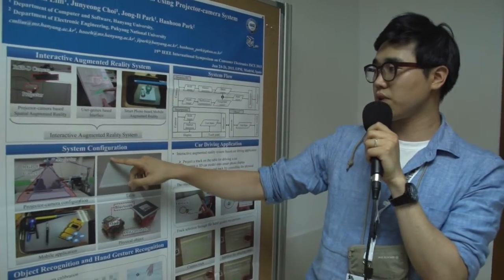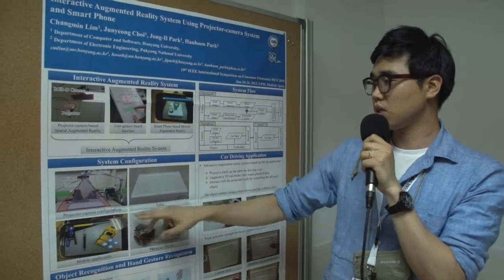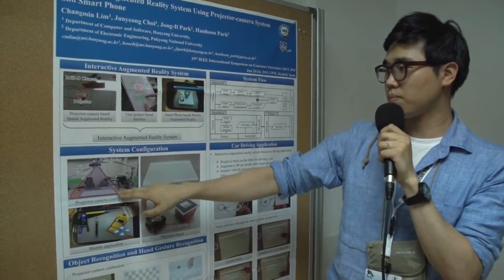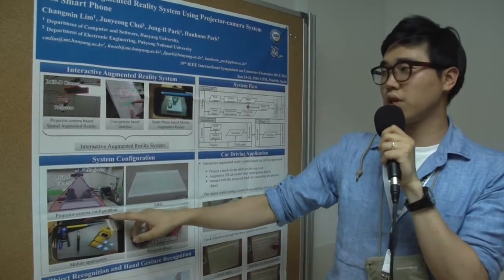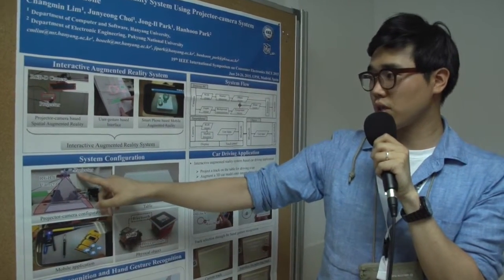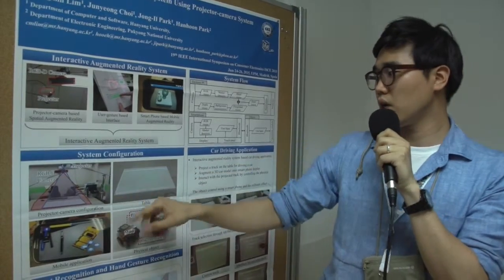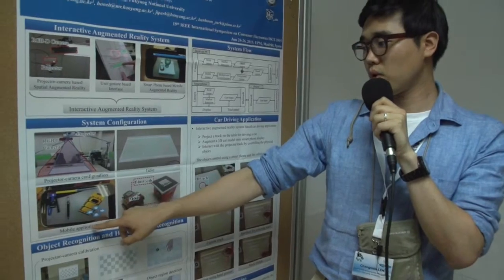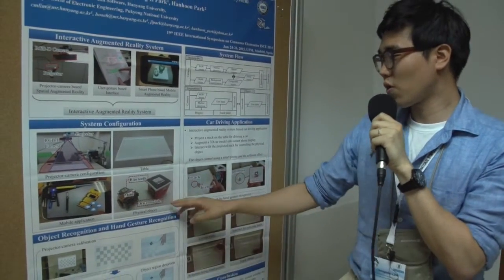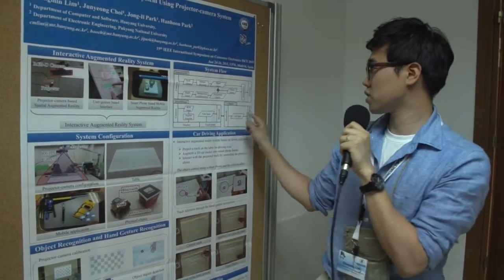This is the system configuration. The top left image shows the projector camera configuration with projector and RGB camera. The right shows a table and the mobile application. The right shows the physical object.